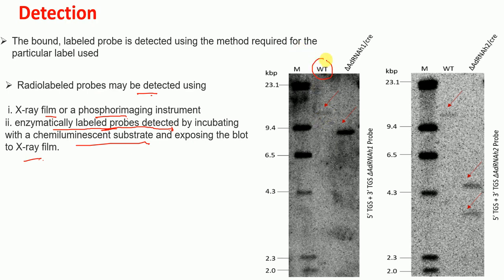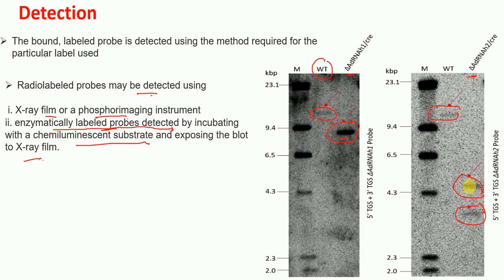Now looking at the Southern blot pictures, I have compared wild type and the knockout. For the knockout Delta adRNAs1, we expected around 8.9 kb and here we got the band at 8.9 kb, because our probes specifically bound to this fragment of the DNA. For Delta adRNAs2, we expected two bands because our probes should bind to two different fragments — and this is what we observed: fragment 1 and fragment 2.